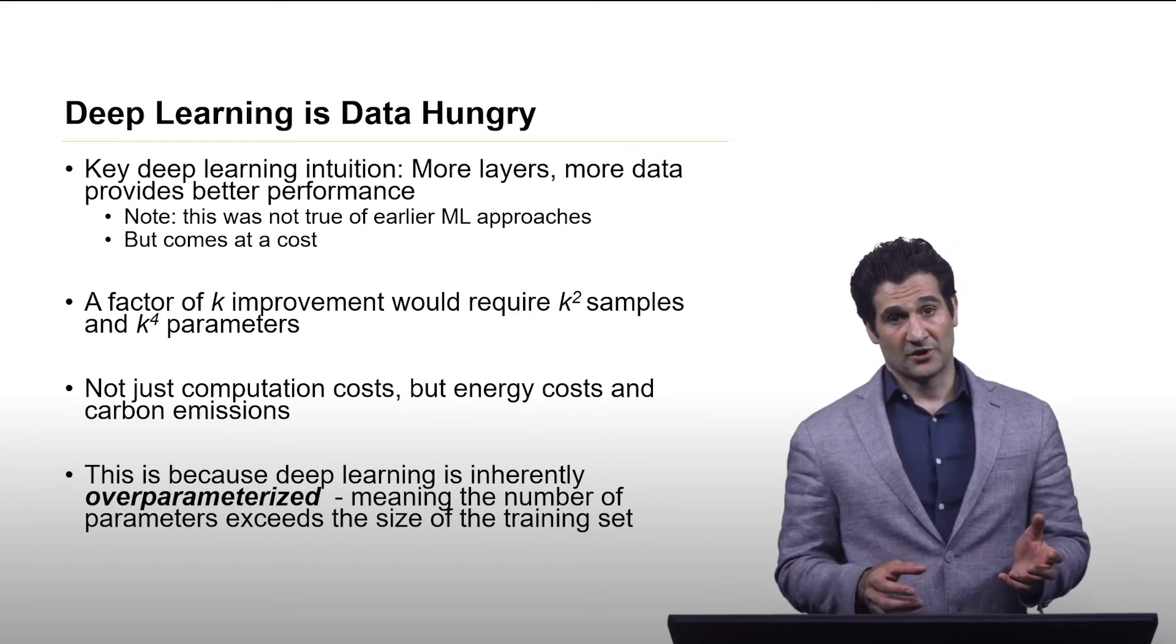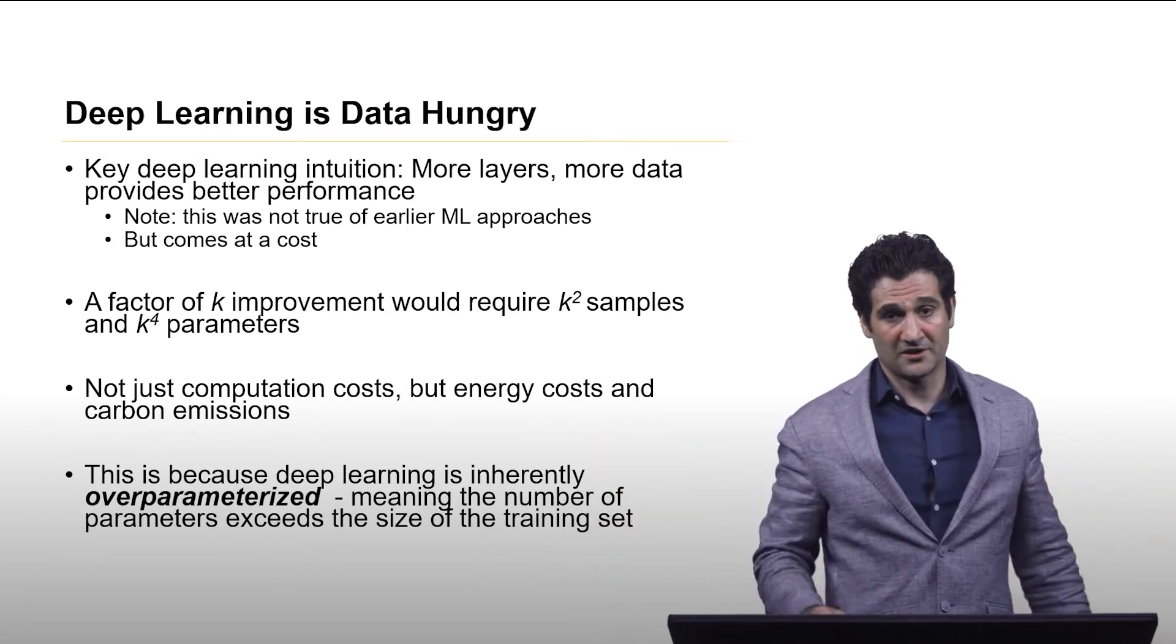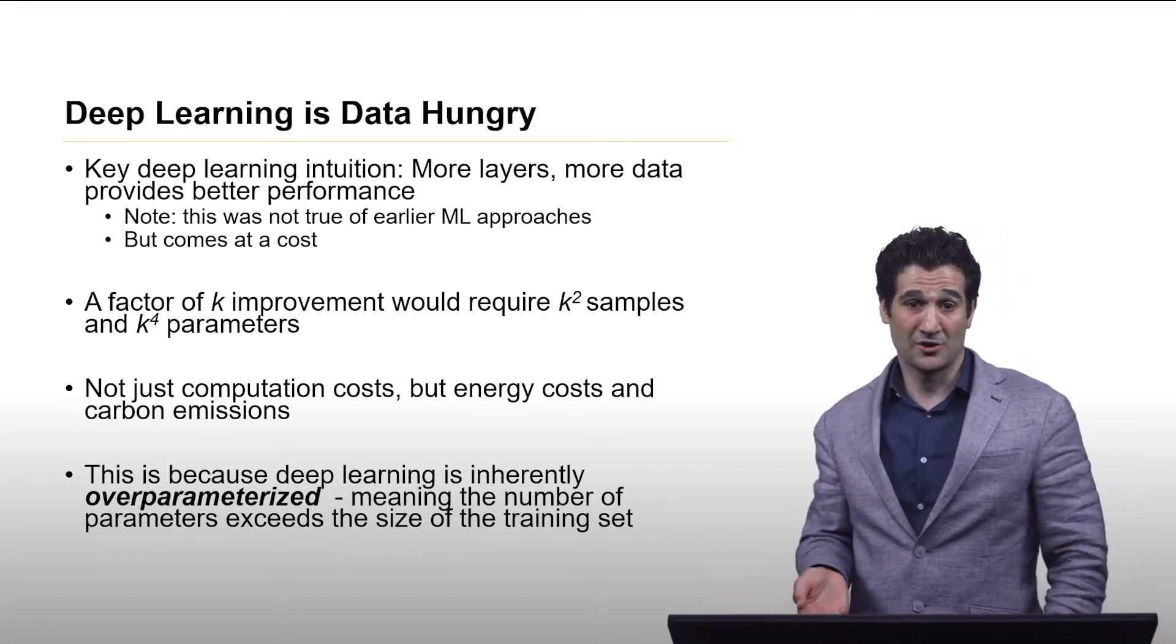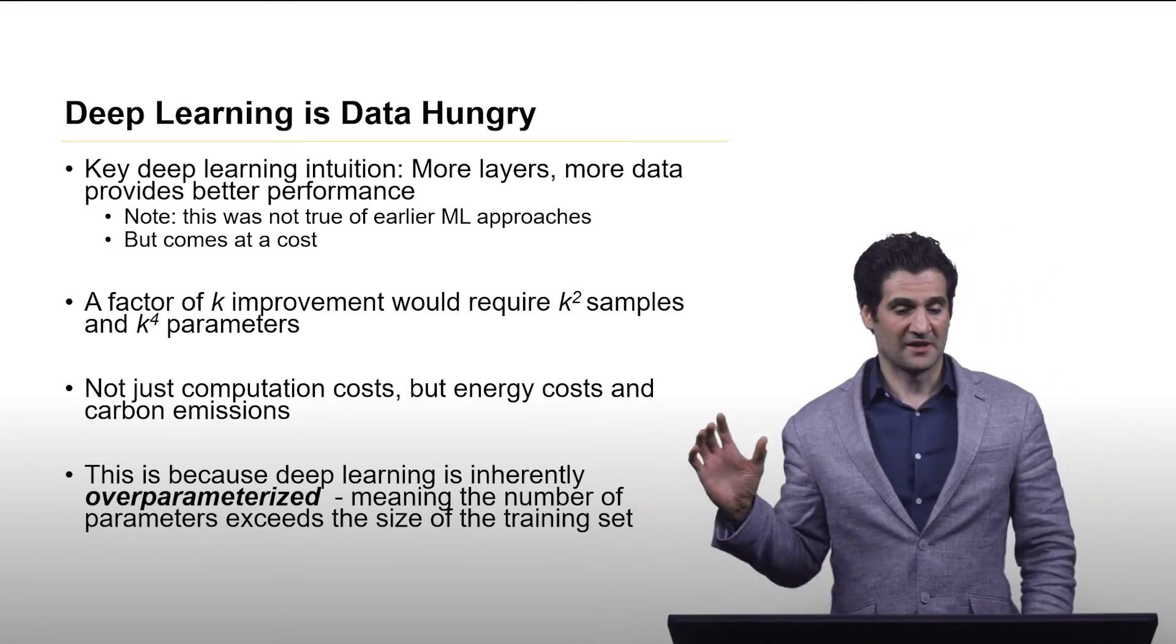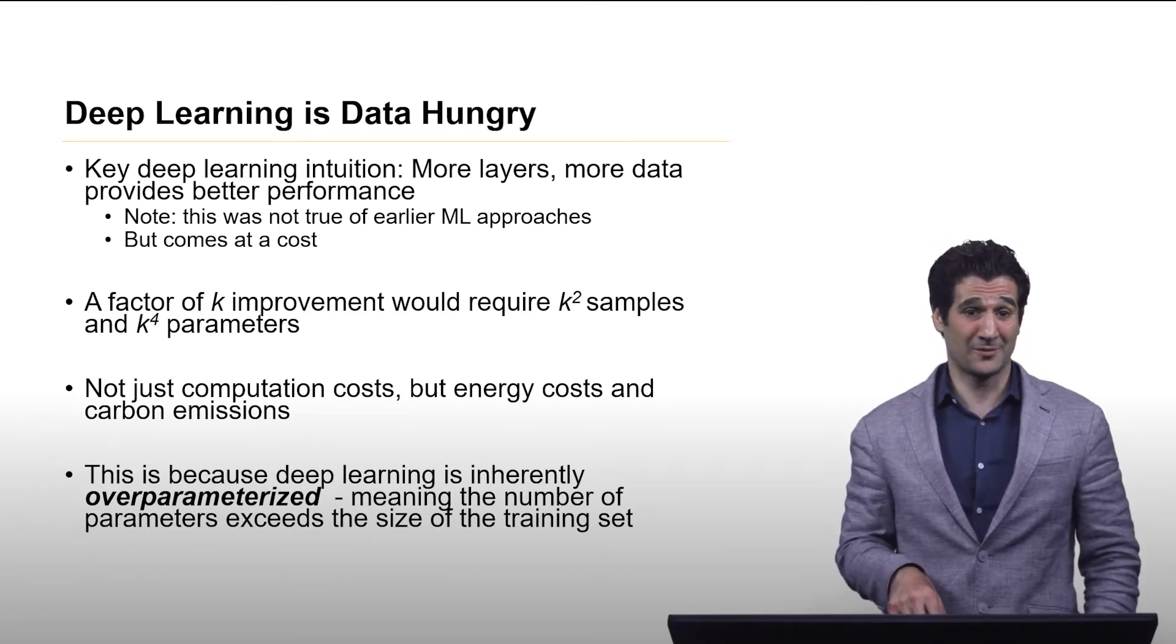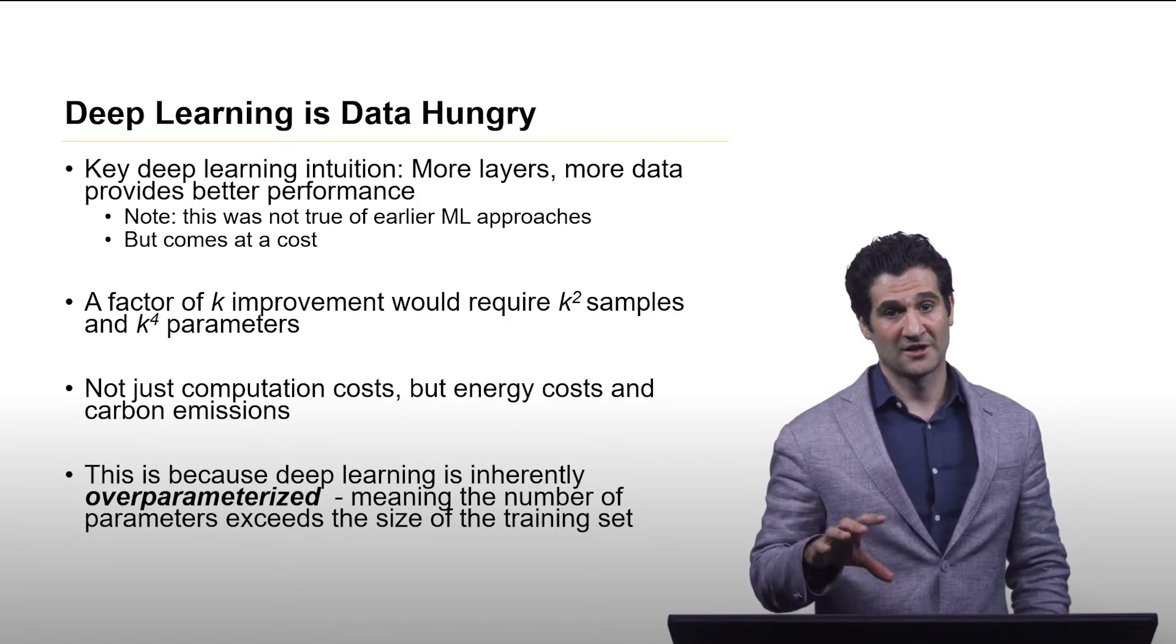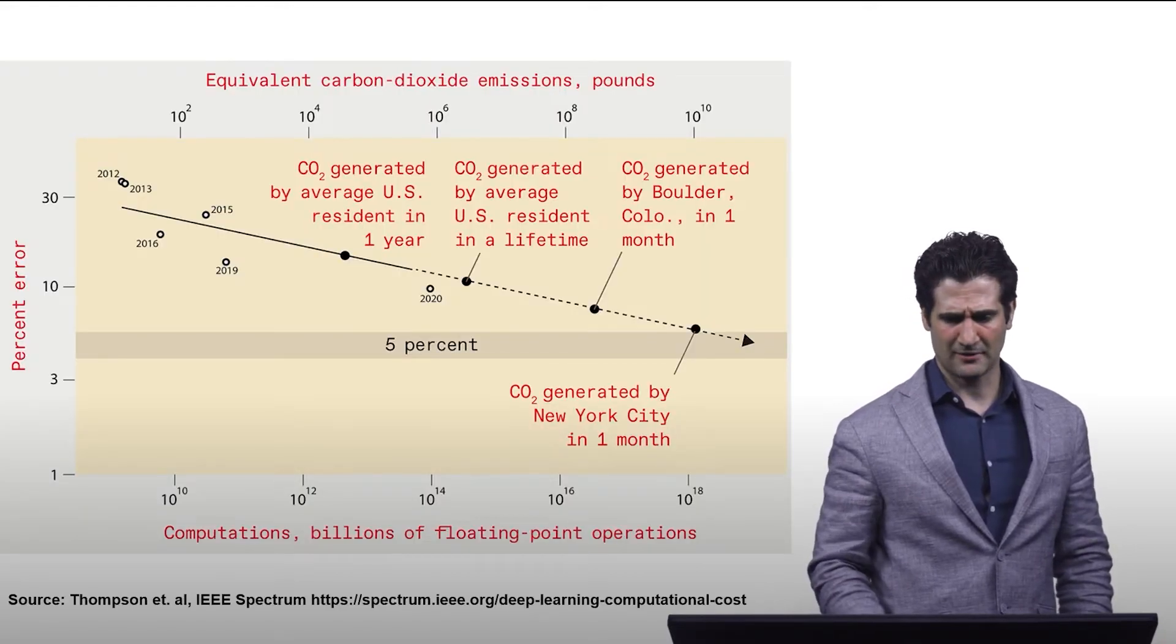An issue with it though is since it's essentially a parametric approach, it's making one big long equation that's fitting to the historical data. To get improvement by a factor of k, it's going to require about k squared more samples, and with deep learning it's going to have k to the fourth parameters. And this is expensive not just in terms of computational cost, but in terms of things like energy and carbon emissions nowadays. And this all stems from the fact that deep learning models are inherently overparameterized, which means that the number of parameters exceeds the size of the training set.